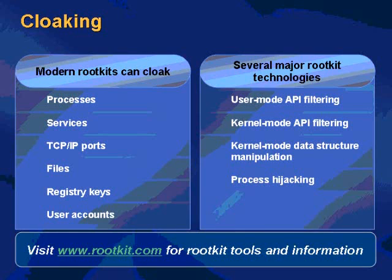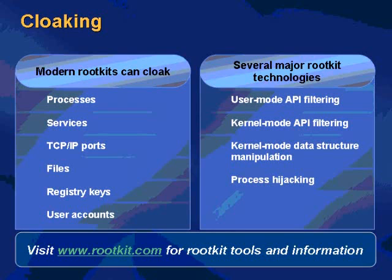Modern rootkits have come a tremendous way since 1994. Modern rootkits can cloak everything from processes to services, TCP/IP ports, files, registry keys, user accounts, and other things. There are several major rootkit technologies that have evolved: user mode API filtering, kernel mode API filtering, kernel mode data structure manipulation, and process hijacking. I'm going to give you a brief introduction to each. If you want to find sample code for these things, go to rootkit.com — the meeting place for rootkit developers.